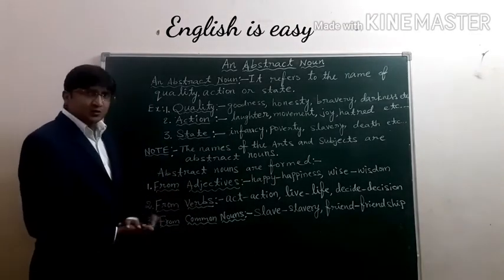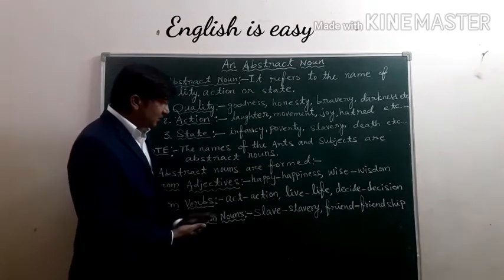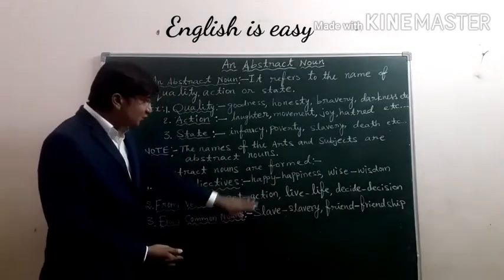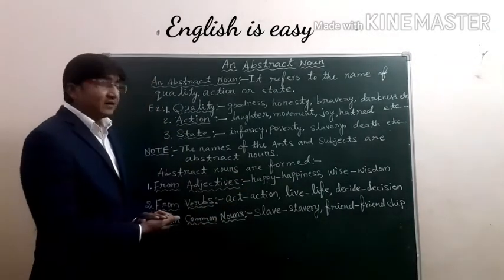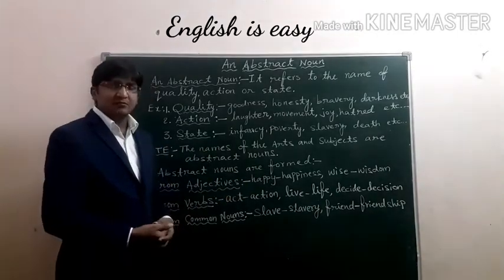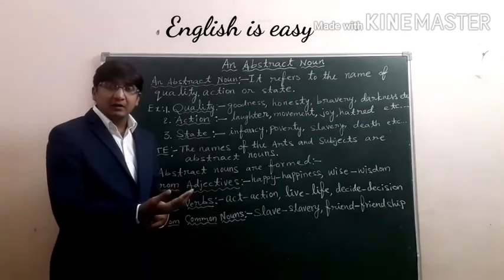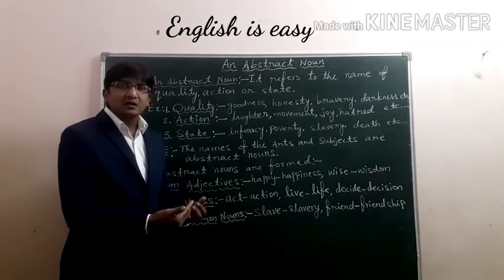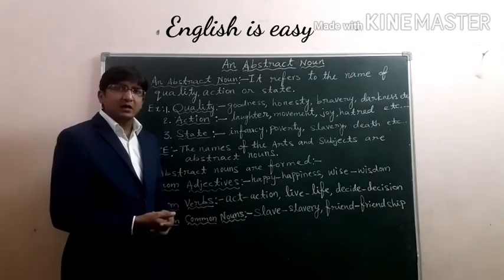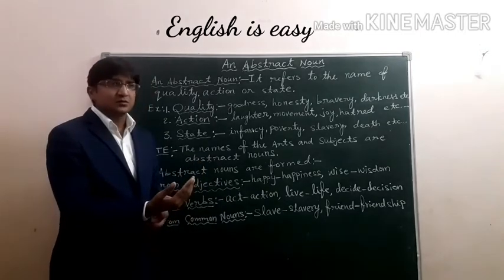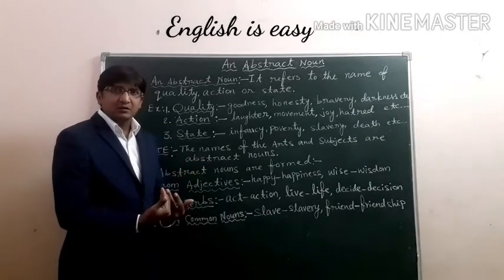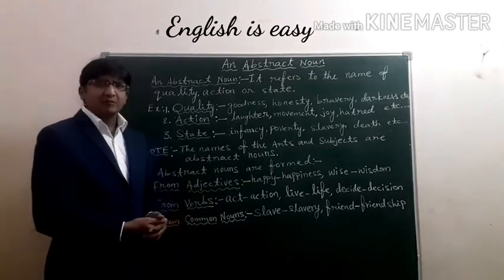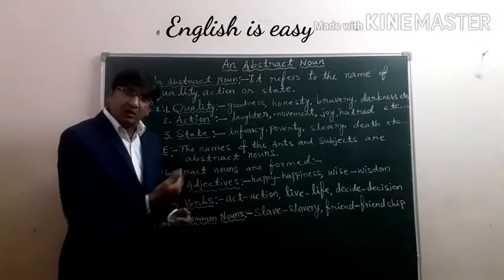From adjectives: 'happy' is an adjective; we can form the abstract noun 'happiness.' Similarly, 'wise' gives 'wisdom.' Other examples: beautiful → beauty, hungry → hunger, angry → anger, powerful → power, difficult → difficulty. For most adjectives, we can find a noun form.